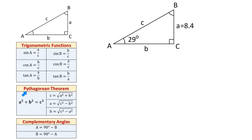Below we have the Pythagorean theorem. If we have a right triangle with the two legs A and B and the hypotenuse C, then A squared plus B squared equals C squared. If we know two of the sides, we can find the missing side. C equals the square root of A squared plus B squared, A equals the square root of C squared minus B squared, and B equals the square root of C squared minus A squared. When finding the hypotenuse, we add the squares of the shorter sides inside the square root. When finding one of the shorter sides, we start with the hypotenuse squared and subtract the other shorter side squared.